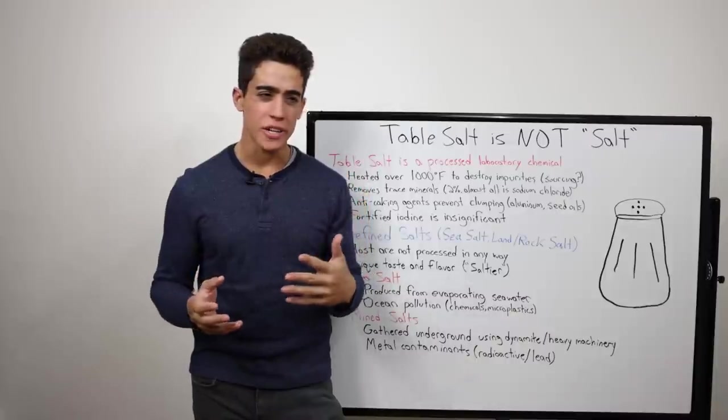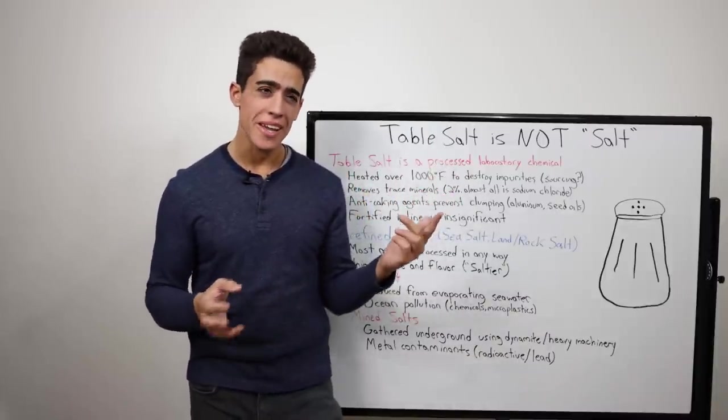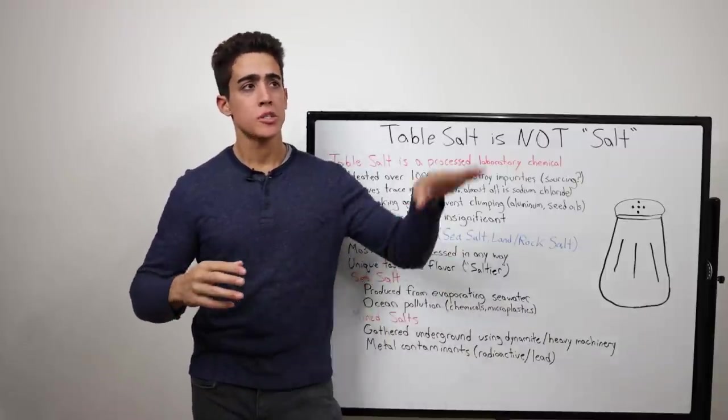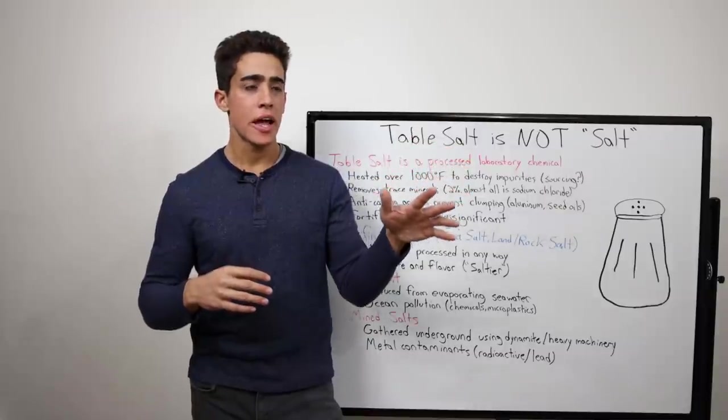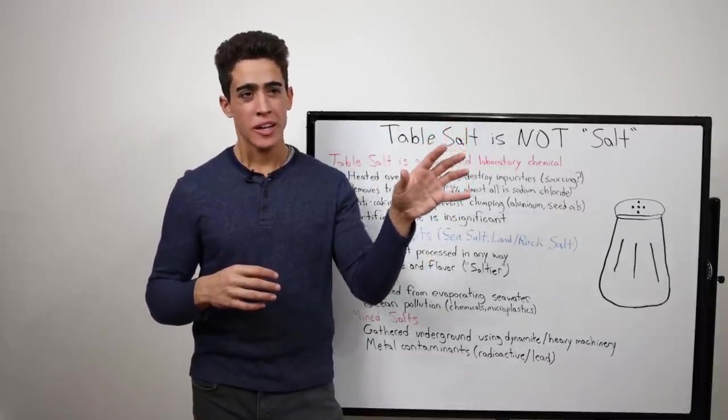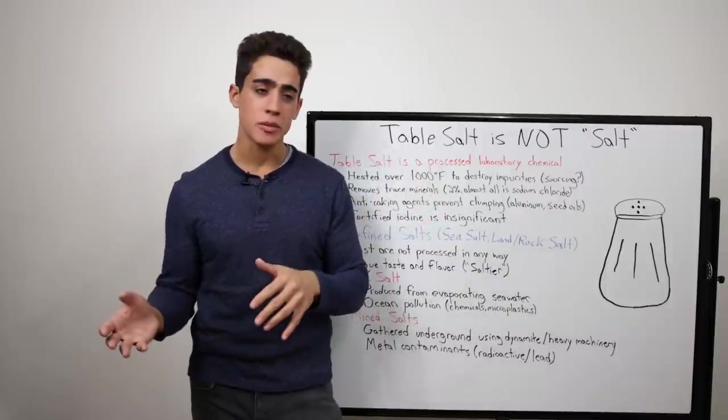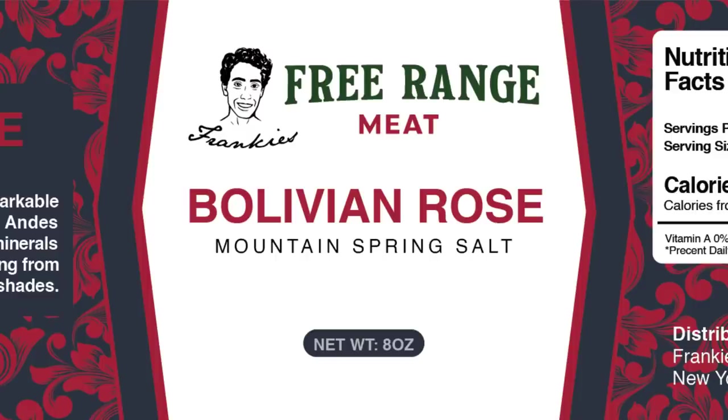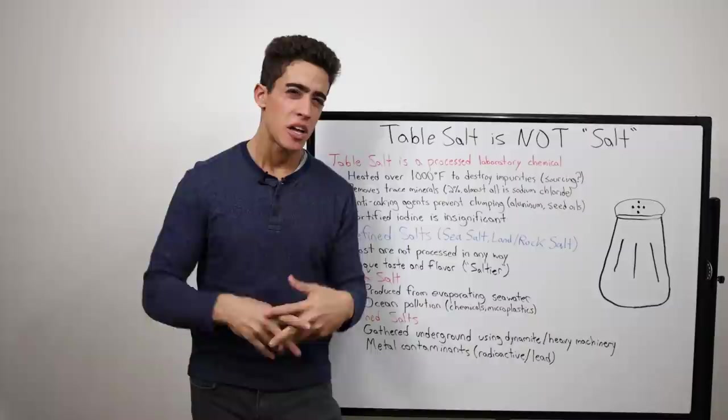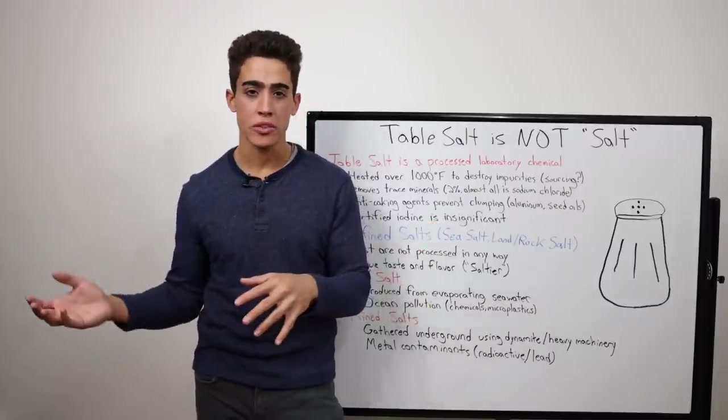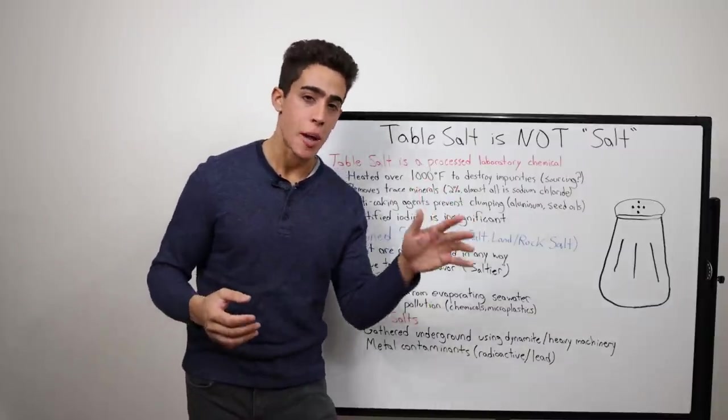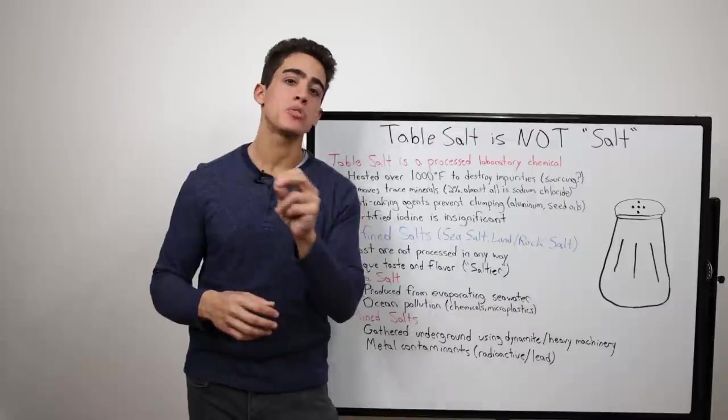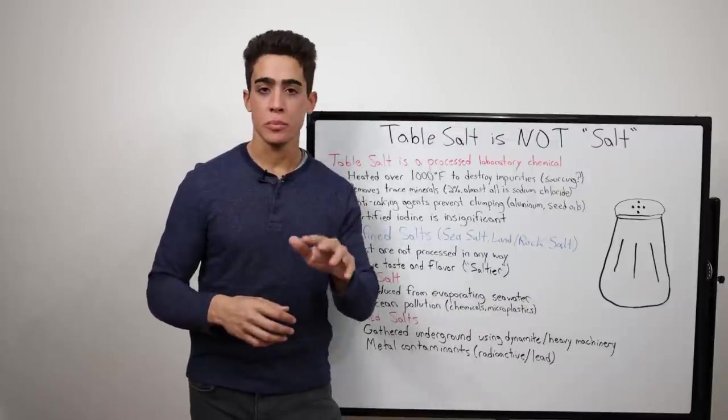Usually I'll have a video idea for several days before the whiteboard Wednesday. But today I actually had to sit down on my computer and figure out what video I wanted to do. So I was going through my list of ideas and I saw table salt on there. And yeah, it wasn't really an interesting topic to me, but I did just launch two salts on Frankie's free range meat, which are both from Mountain Springs. So this seems to be the perfect harvesting method. You avoid those contamination problems from both the ocean and the land salts.